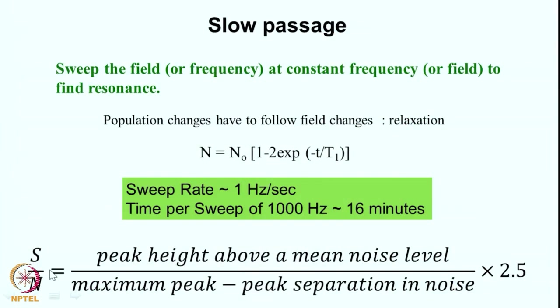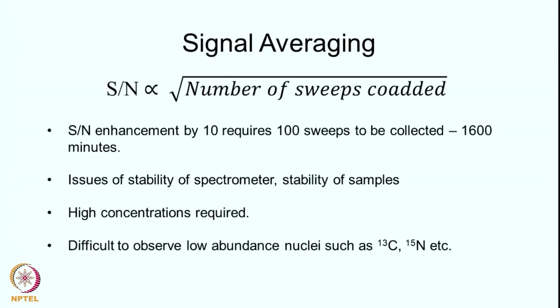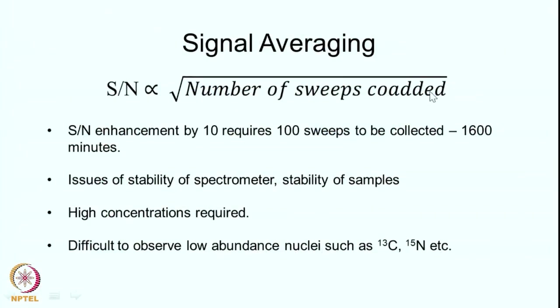Typically this signal-to-noise ratio is very small because NMR spectral sensitivity is quite low. If I want to increase the signal-to-noise ratio, the technique is called signal averaging. You sweep the spectrum several times and add them together. The signal adds as the number of scans, whereas the noise adds as the square root of the number of scans. So the signal-to-noise ratio improves as the square root of the number of sweeps co-added. To enhance SNR by a factor of 10 you need 100 sweeps, which at 16 minutes per scan requires 1600 minutes.